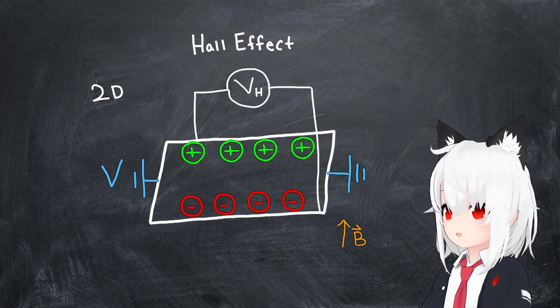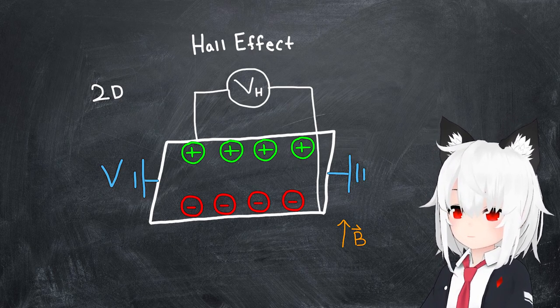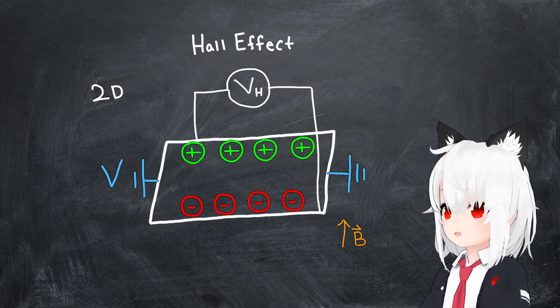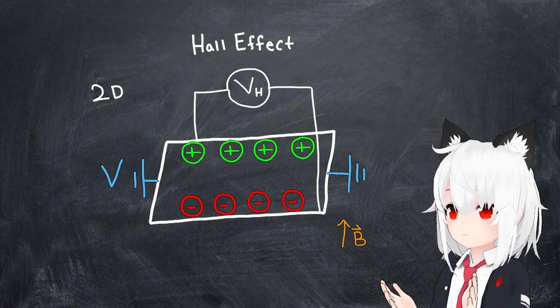This Hall voltage is directly related to the presence of the magnetic field, and so you'd guess that if you were to turn off this magnetic field, this Hall voltage should go to zero, right?